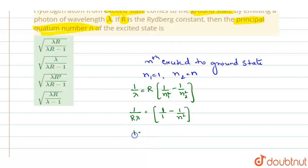So, we can write it as 1 minus 1 by n square is equal to 1 by R lambda. Or, taking 1 to the other side, you can write it as 1 by n square is equal to 1 minus 1 by R lambda.